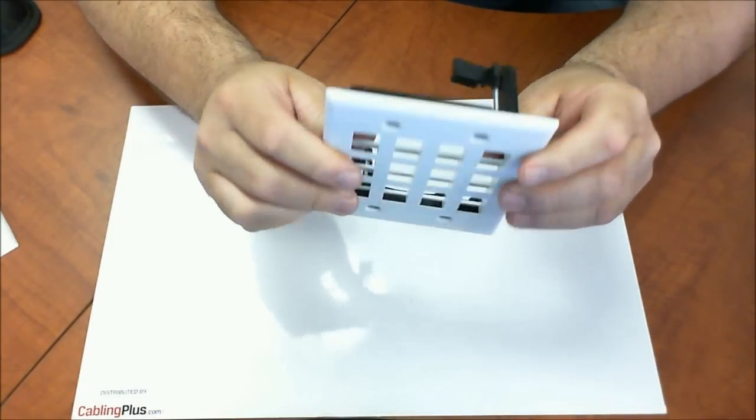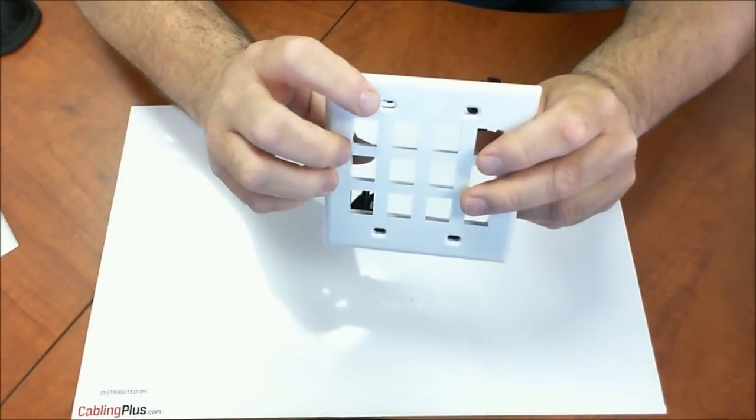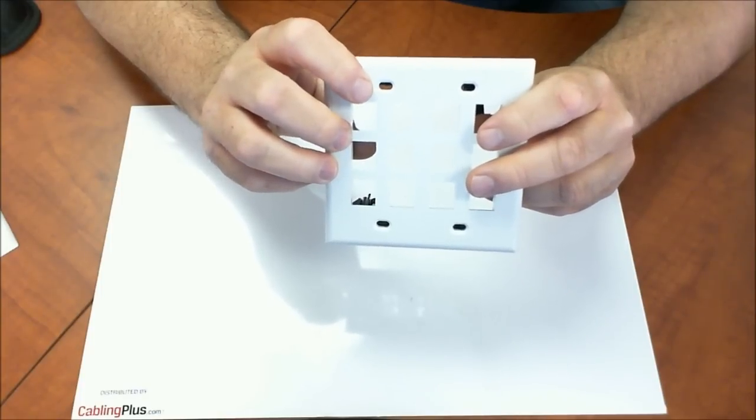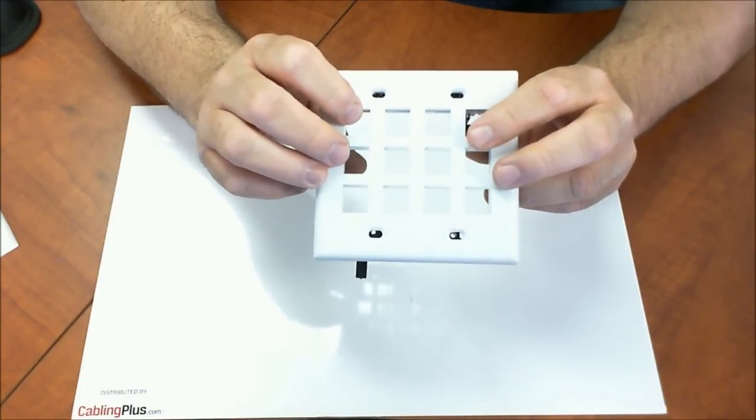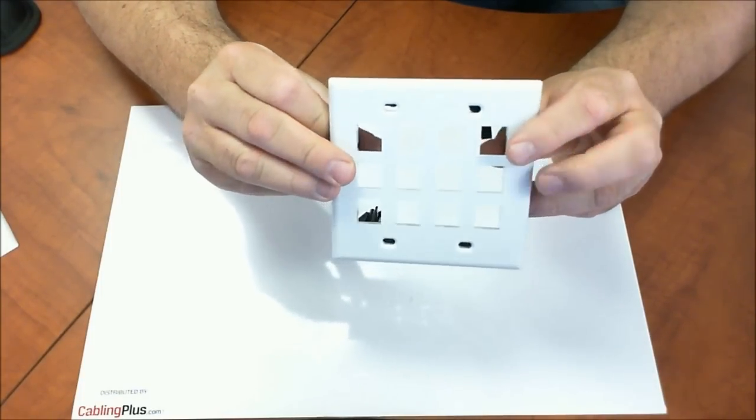And again, what you're going to have is the hole placements are going to match so you can screw your plates right onto the LV-2, and now you have that surface to mount on.